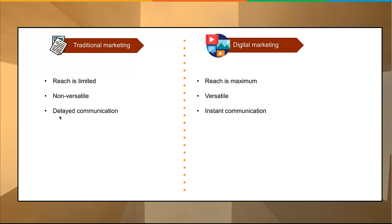With traditional marketing there's always delayed communication — if you're trying to get a TV spot, there might not be one open until 1 in the morning. With digital marketing there are no hour restrictions; you can get your point out there and have people see it instantaneously. Traditional marketing also has a lack of real-time results, whereas digital marketing's biggest benefit is instant real-time results — you can look at real-time reporting analytics.